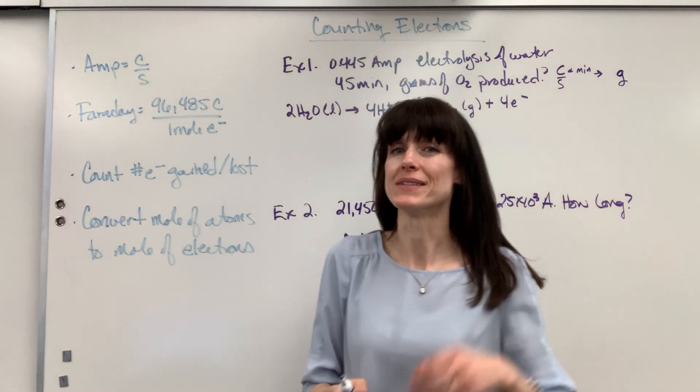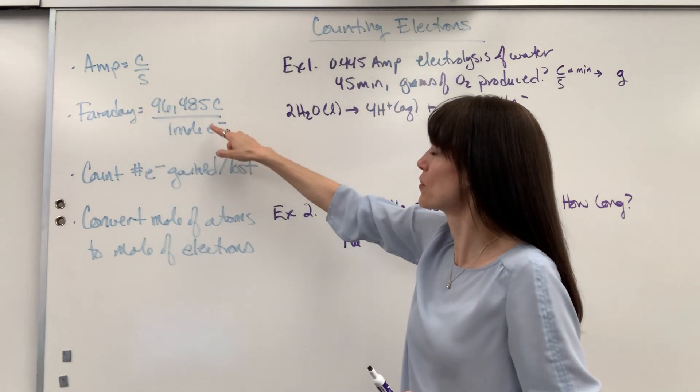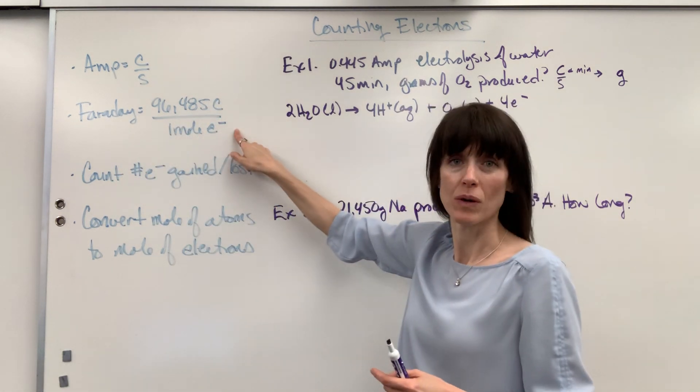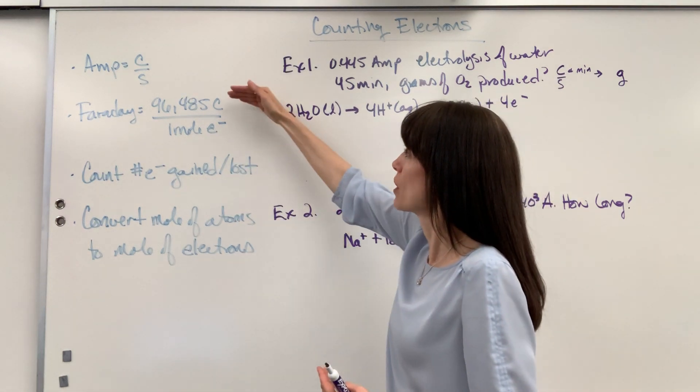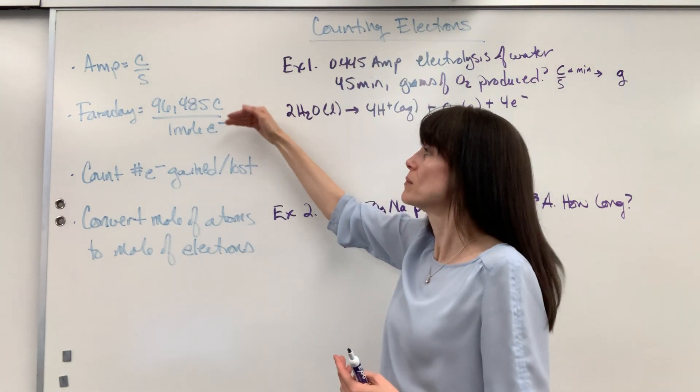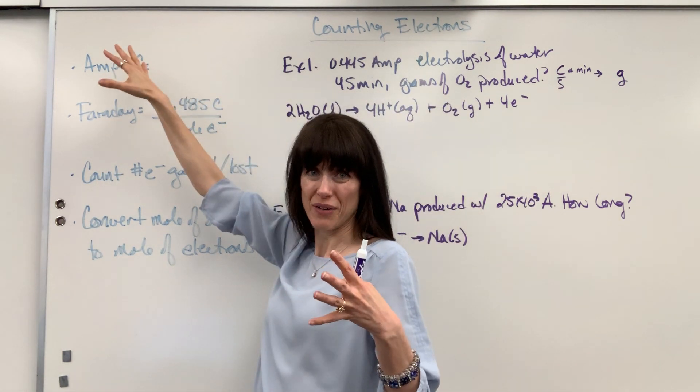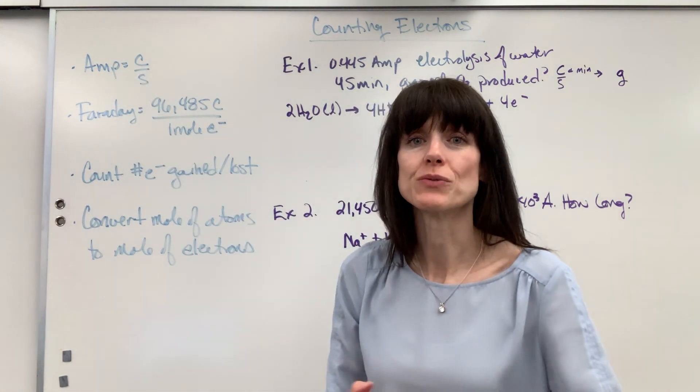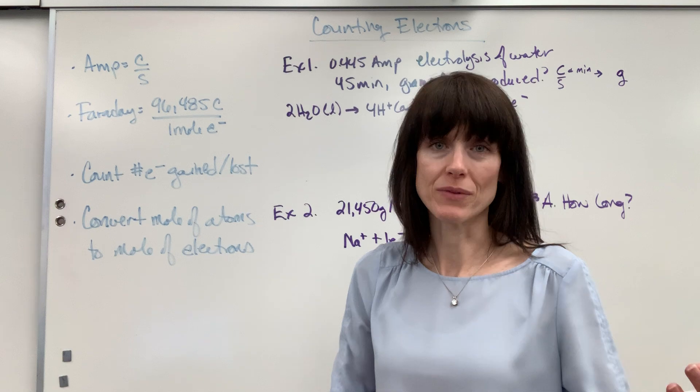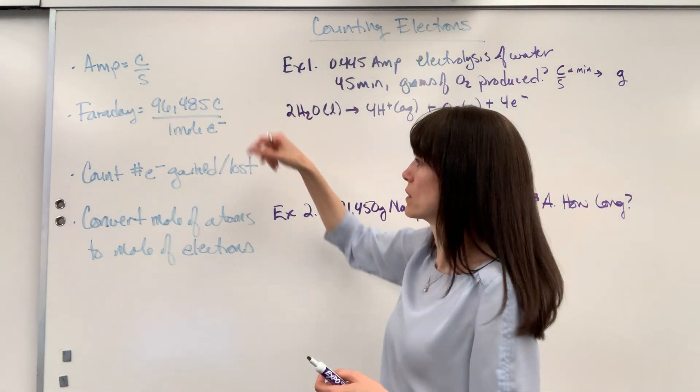Remember that an amp is a coulomb per second. Next, Faraday's constant, 96,485 coulombs per one mole of electrons. Here's the power of Faraday's constant. It allows us to go from current to moles of electrons, which means that's the bridge to get from our electricity stuff, the amperage. It walks the bridge over to the moles where we can start moving into amount of substance. Really powerful. We use this one a lot.